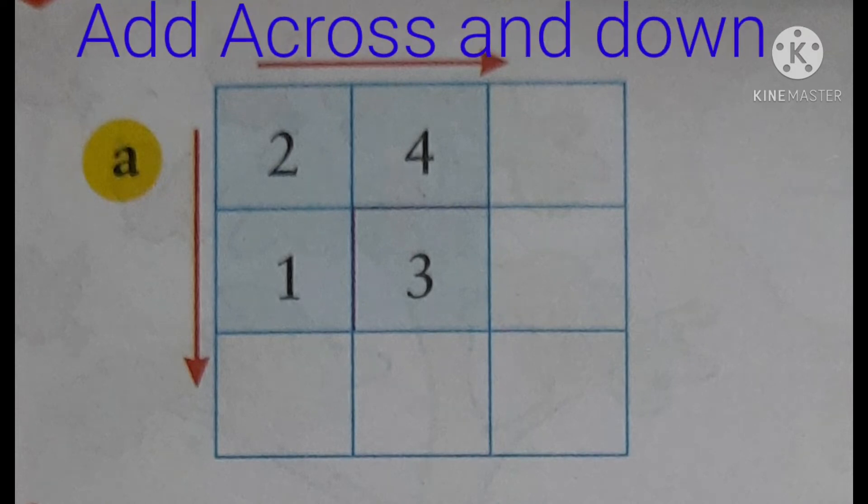Add across and down. Across means your right side. You see arrow mark is given. And down side.